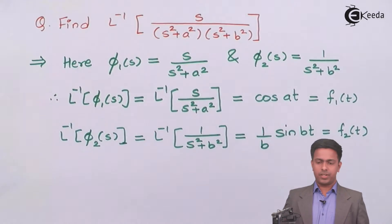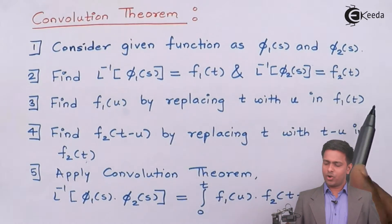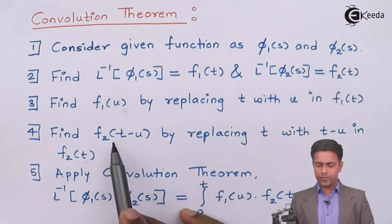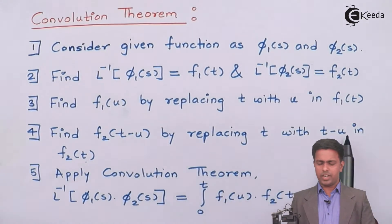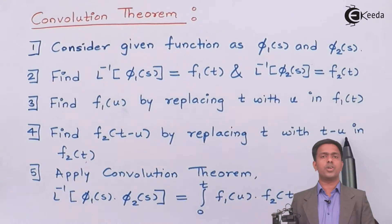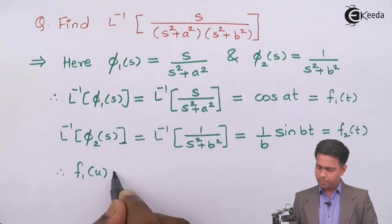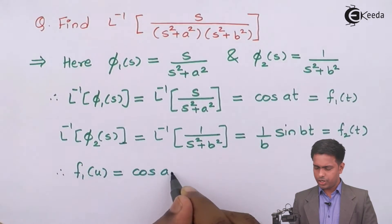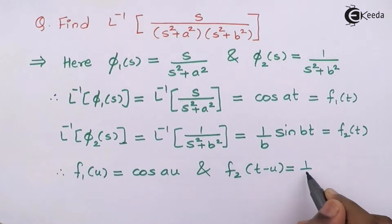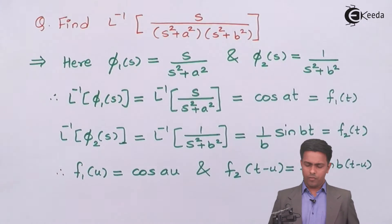Step number three says: find F1(U) by replacing T with U in F1(T). Step number four says: find F2(T − U) by replacing T with (T − U) in F2(T). Replacing T with U in F1 gives F1(U) = cos(AU). Replacing T with (T − U) in F2 gives F2(T − U) = (1/B)sin(B(T − U)). We now have both values.